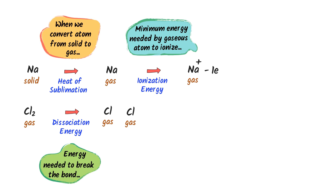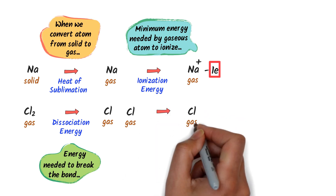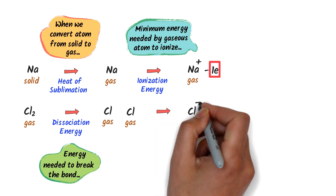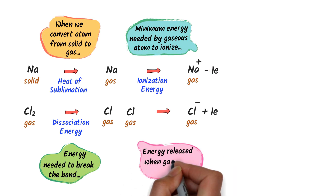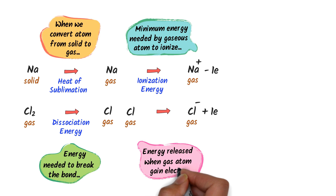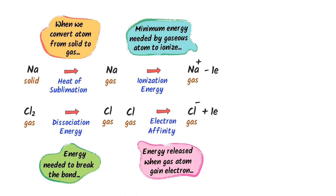Lastly, chlorine gas will gain this electron to become a negative chlorine ion. Remember that when a gaseous atom gains an electron to form a negative ion, the energy released is called electron affinity.